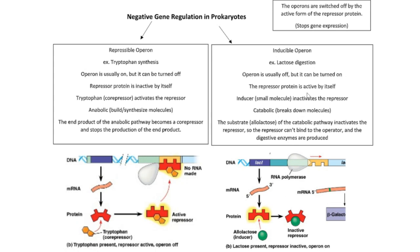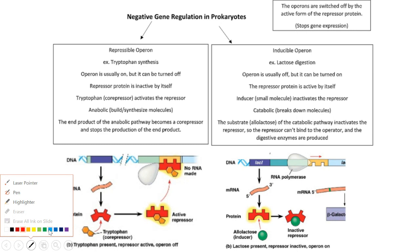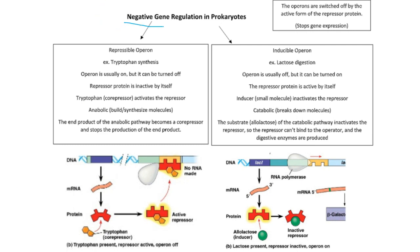I want to run through negative gene regulation and positive gene regulation in prokaryotes. Negative gene regulation happens anytime you've got a repressor — whether it's a repressible operon or an inducible operon. Either way, a repressor is present. So for the two types of negative gene regulation, there are repressible operons and inducible operons.